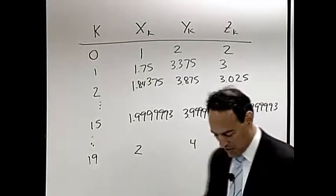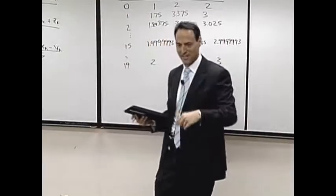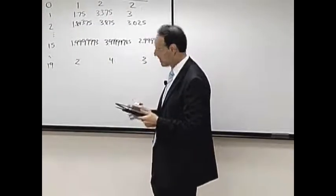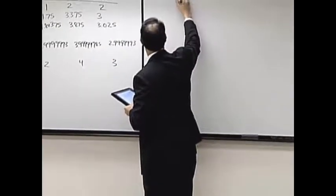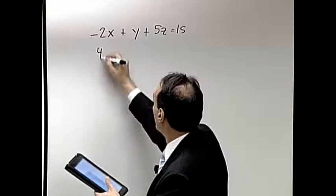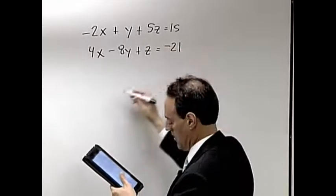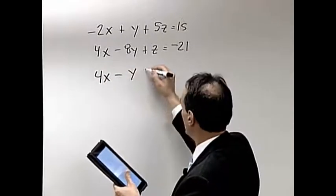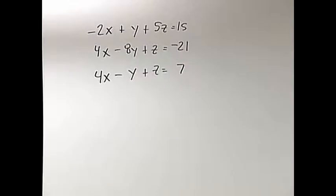Okay, now you may feel like you can do iteration in MATLAB. Let's do another set of equations. Here's my second set of equations: negative 2x plus y plus 5z equals 15, 4x minus 8y plus z equals minus 21, and 4x minus y plus z equals 7. It's the same set of equations except I flipped the first and last row.